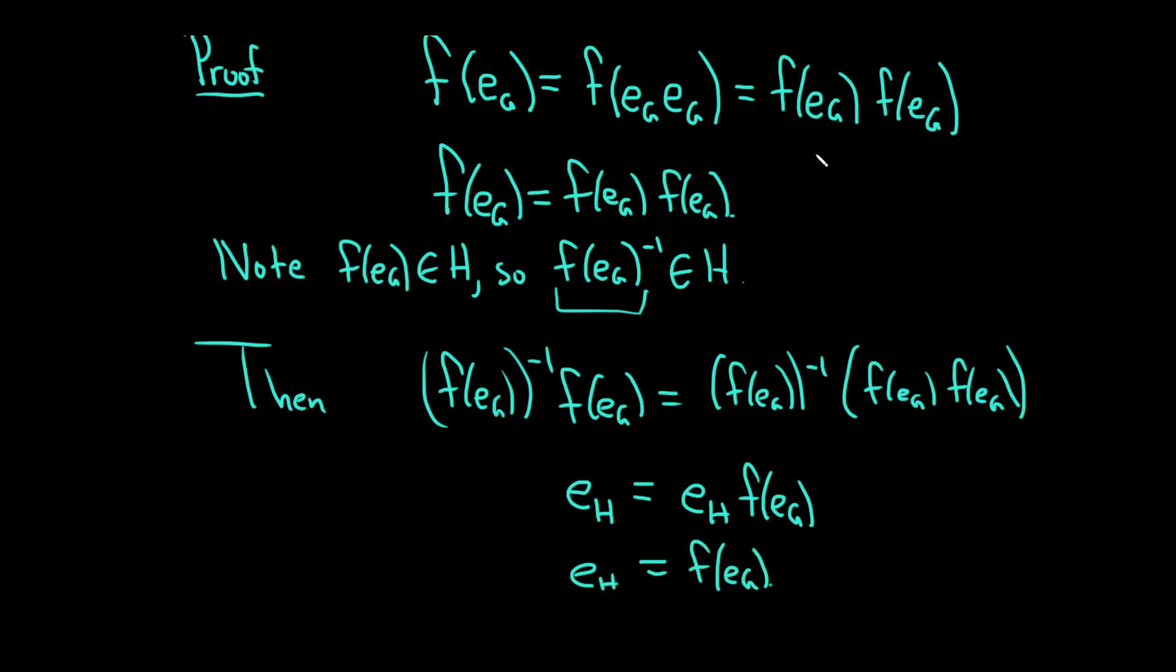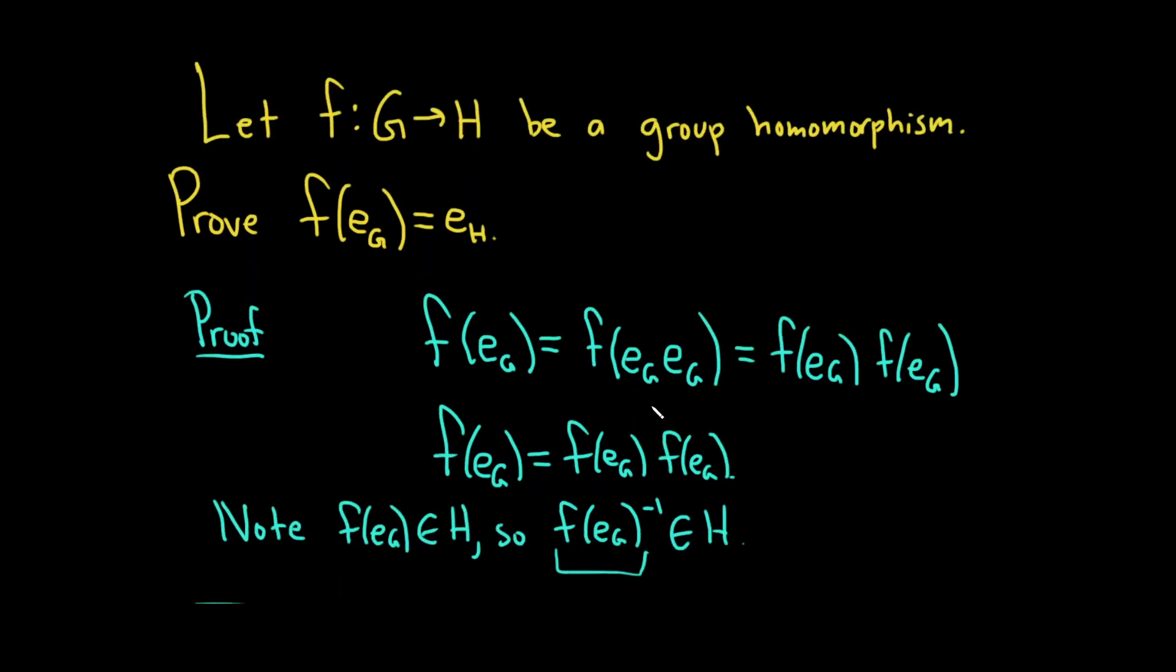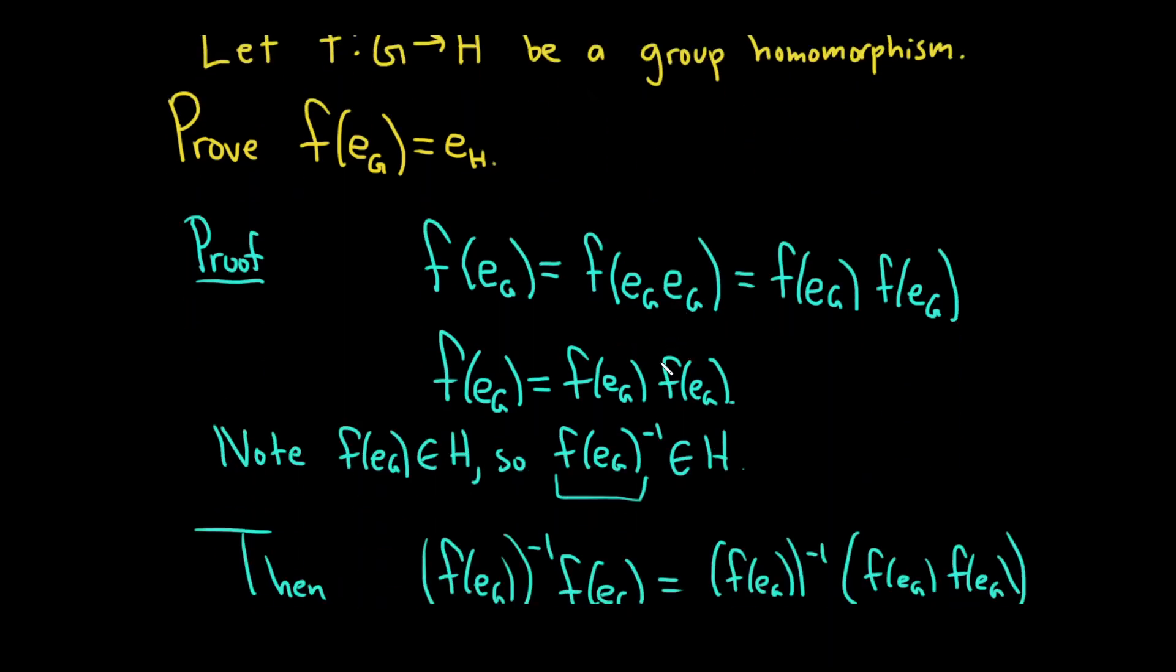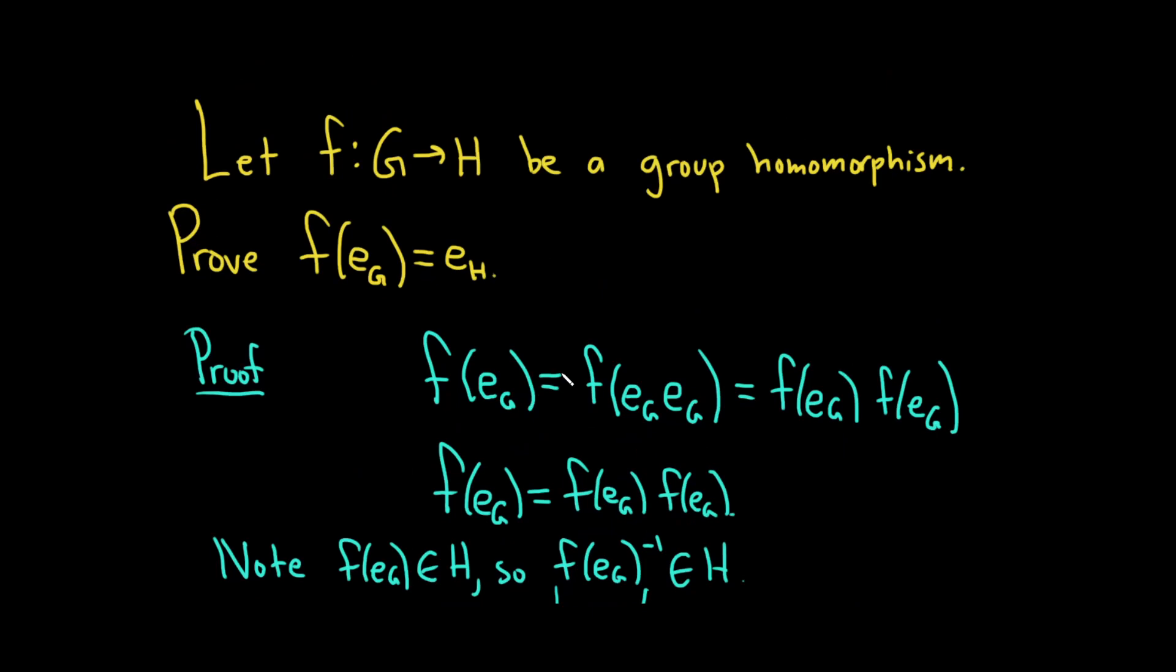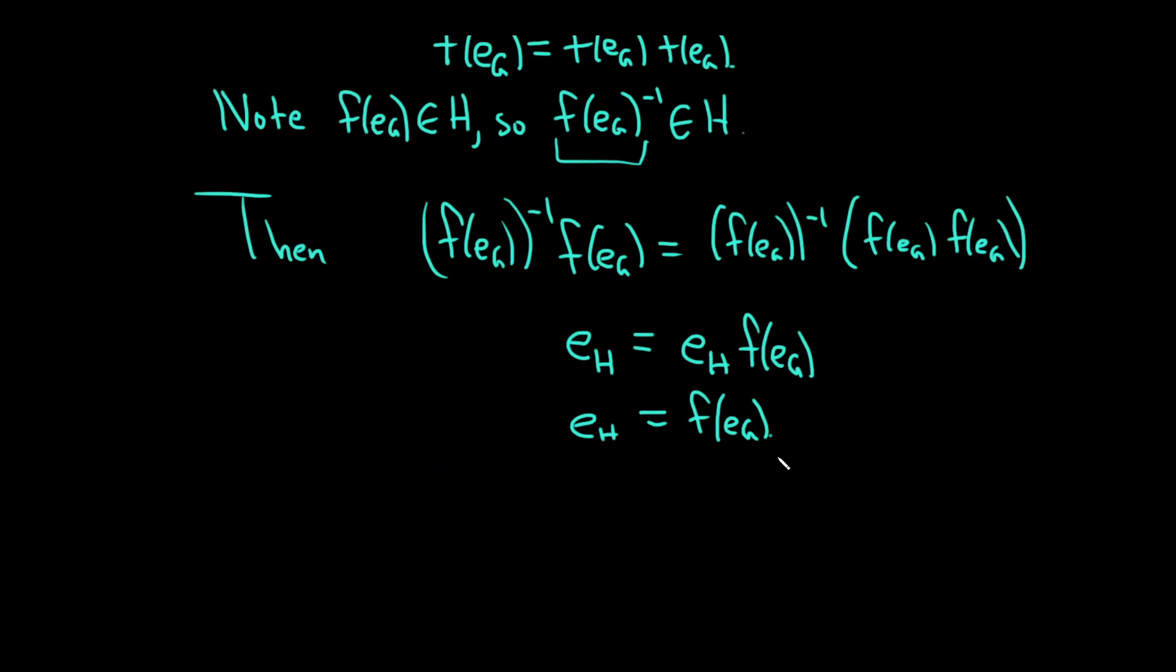That's what we had to show. Really simple problem—don't get bogged down by the notation. You just take the identity element and break it up because of the identity, then use the fact that f is a group homomorphism. Then multiply both sides by the inverse of this element, and you're good to go. I hope this video has been helpful. Good luck.